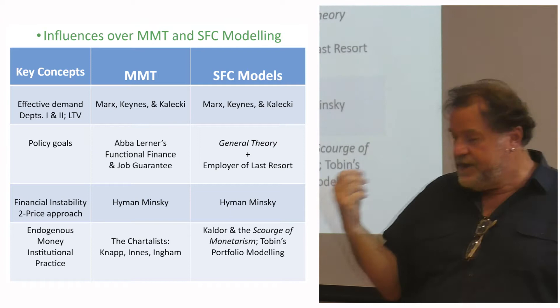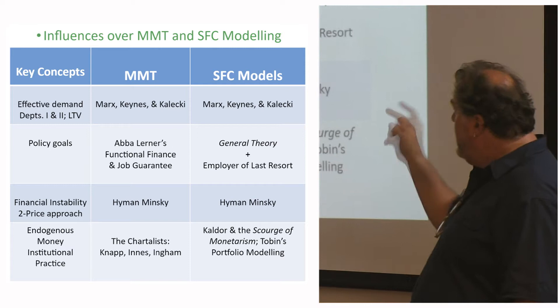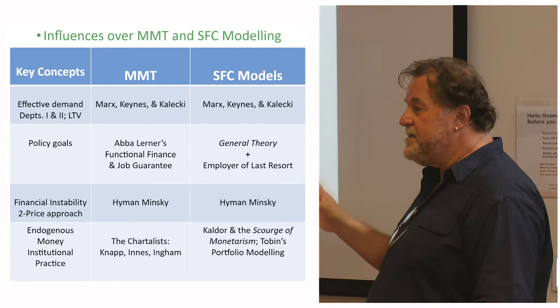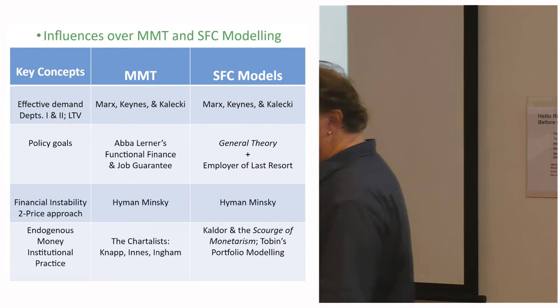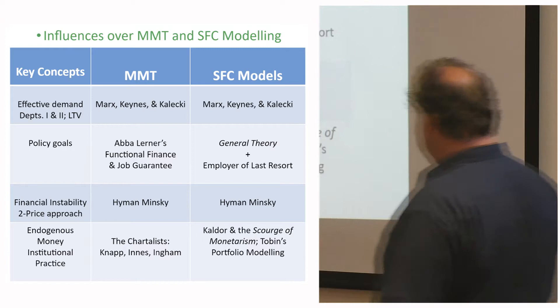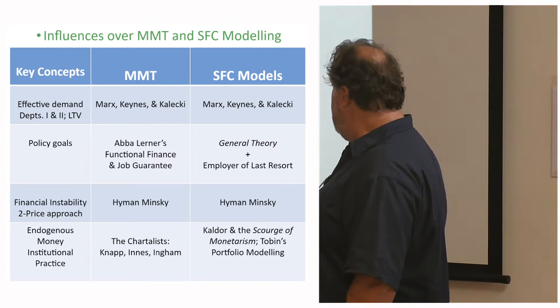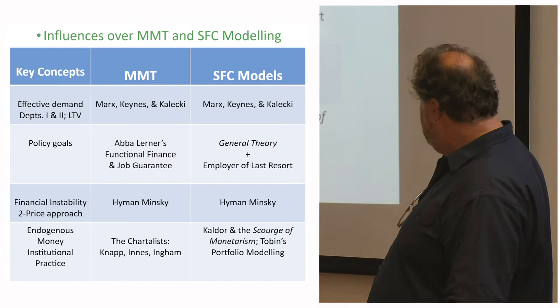Around Keynes in the 1930s you had the Cambridge Circus. From functional finance, MMT got its emphasis on policy — the focus on full employment with low inflation — and the view that we don't need to be obsessed about the balance of payments and the current account deficit. The issue of financial instability comes from Hyman Minsky, who was an influence over both strands of thinking.